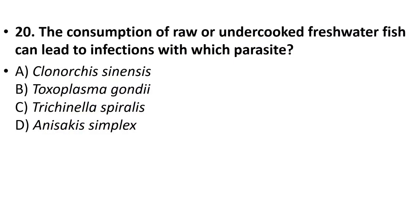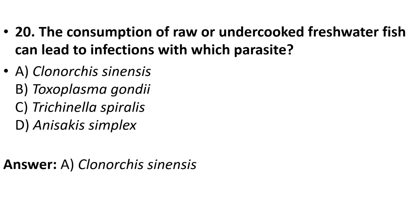Question 20: The consumption of raw or undercooked freshwater fish can lead to infections with which parasite? Options: Clonorchis sinensis, Toxoplasma gondii, Trichinella spiralis, Anisakis simplex. The answer is Clonorchis sinensis.